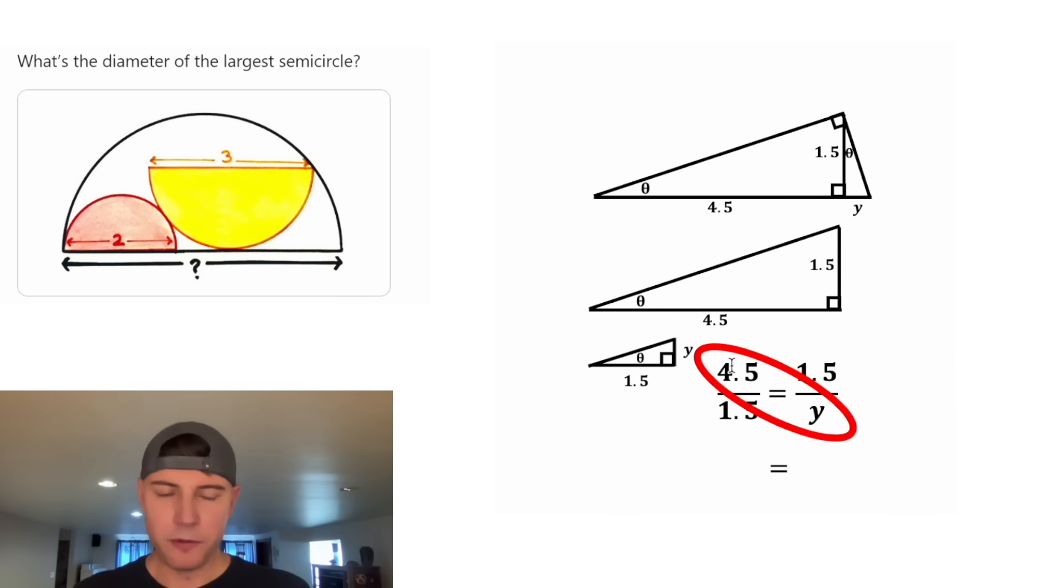Next, we can cross-multiply. 4.5 times y is 4.5y, and 1.5 times 1.5 is 2.25. Then to solve for y, we can divide both sides by 4.5. That'll give us y is equal to 0.5.